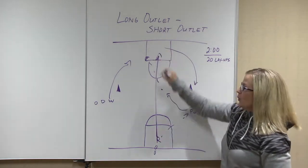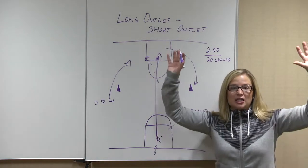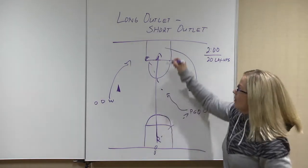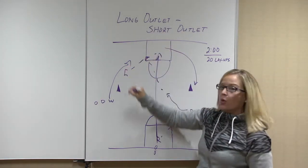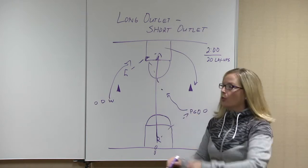The rim run sprinting down the floor, we like to do that in four seconds. Hands above our shoulders, gets it out of the net, makes a great outlet pass to our point guard who's now flowed to the other side of the floor.